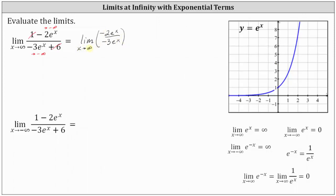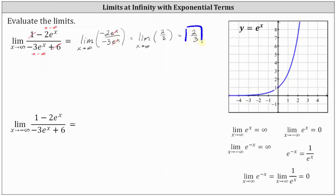Notice in this form we can simplify. E to the x divided by e to the x simplifies to one, leaving us with just the limit of positive two thirds as x approaches infinity, which is equal to two thirds. So this would be one approach we could take to determine the limit.